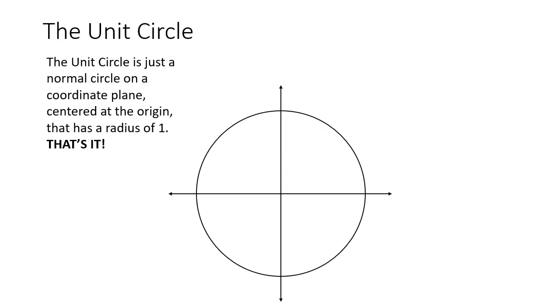Let me explain to you what the unit circle is very simply. The unit circle is just a normal circle on a coordinate plane, centered at the origin, that has a radius of one.